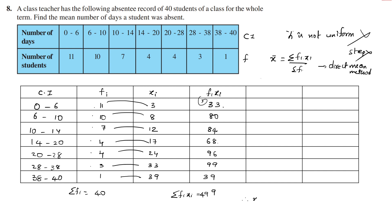Therefore, x bar is equal to sigma fi xi divided by sigma fi, which is 499 divided by 40. 499 by 40, calculating: 40 times 12 is 480, leaving 19. 19 divided by 40 is 0.475. So the answer is 12.475, approximately 12.47.